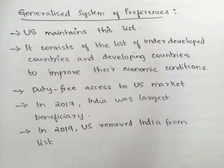The Generalized System of Preferences is a list of underdeveloped and developing countries maintained by the US. The main goal of this list is that the US provides duty-free access to exports from those underdeveloped and developing countries in order to improve their economic conditions.